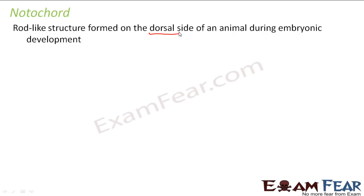Can you relate this notochord to any part of the human body? Our backbone or the vertebral column — it is on the back side, it is a rod-like structure, and it gives support to our skeleton. So this notochord is also a similar kind of structure, a rod-like structure which is formed in an animal during embryonic development, from that time itself it starts developing. This notochord is basically formed of cells from mesoderm and it helps in supporting the body.